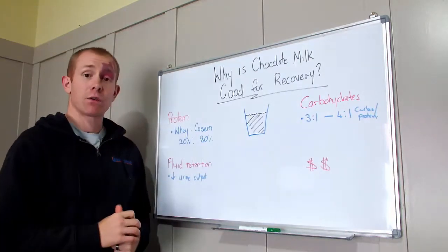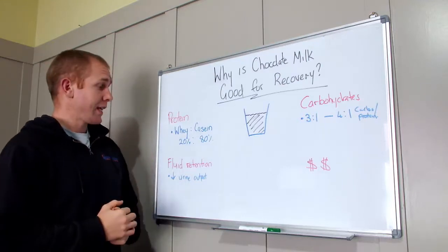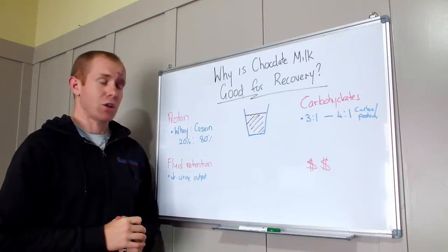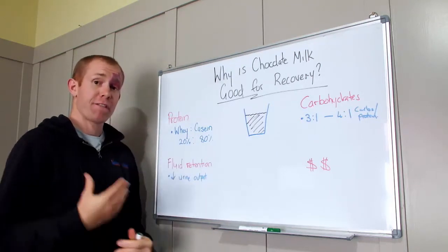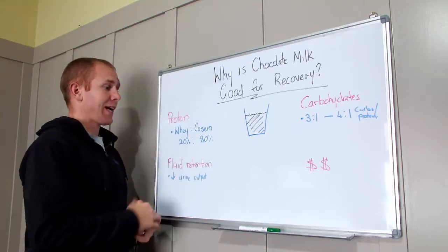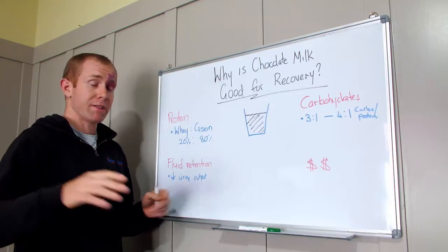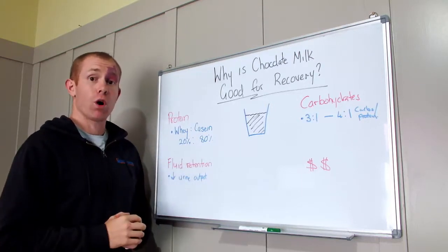Well, one of the key things for recovery is protein, and milk naturally has about 20% whey protein and 80% casein protein. Whey protein is your fast release protein. Casein protein is slightly slower release, so you get a more even distribution. This combination here is quite effective for recovery.